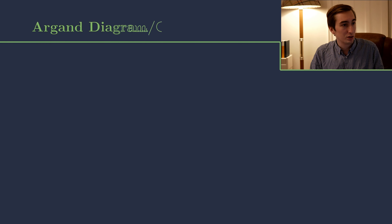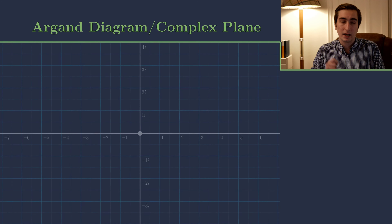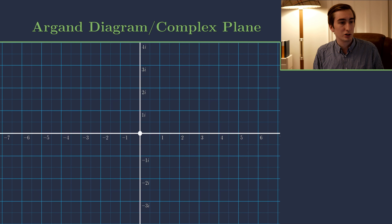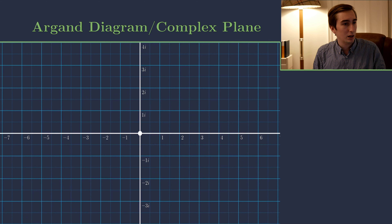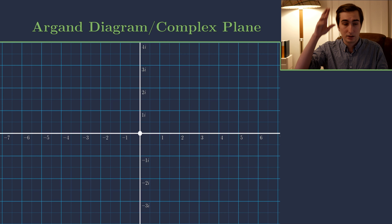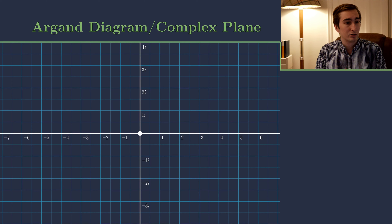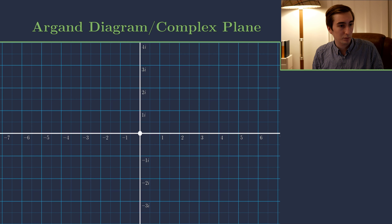This geometric picture is extremely intuitive and leads us to the concept known as the Argand diagram or complex plane. Here the x-axis contains the real numbers — we think of this as the real number line — and the vertical y-axis contains the imaginary numbers, the imaginary number line. The imaginary number line lies perpendicular to the real number line, exactly as we deduced.